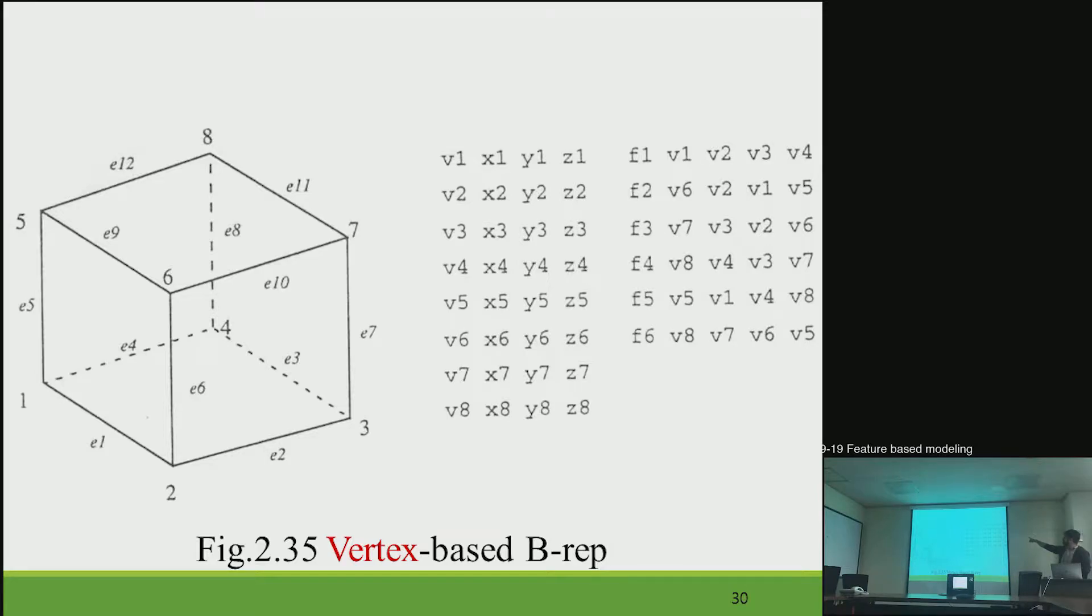And V4 also appears in face five. V4 and V3 also appear in face four. And V2 and V3 appear in face three. And V1 and V2 appear in face two. So as many times as vertex exists in the model, it appears in the data structure.